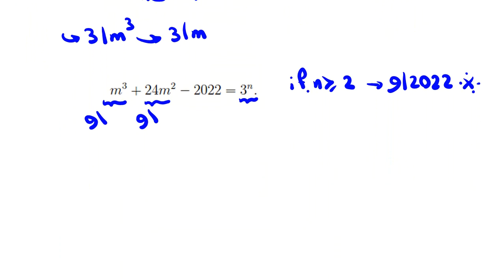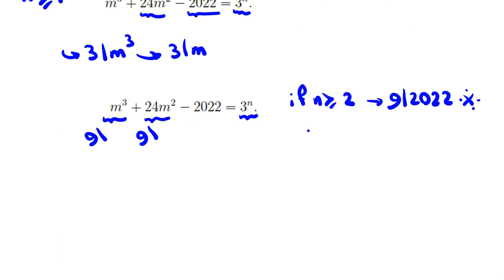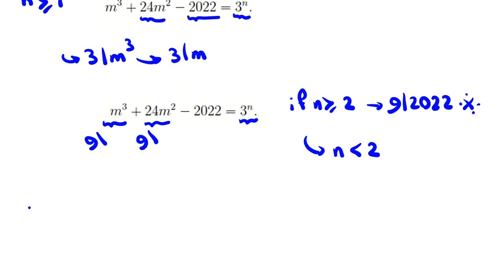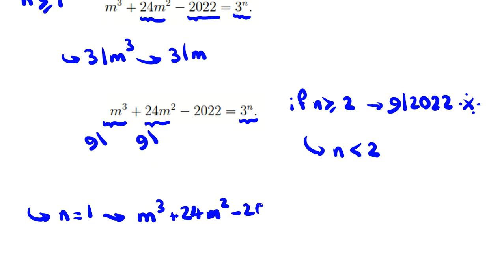We conclude n cannot be ≥ 2, and since n ≥ 1, the only remaining case is n = 1. So the equation becomes m³ + 24m² − 2022 = 3, which simplifies to m³ + 24m² = 2025.